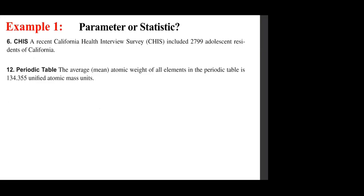A recent California Health Interview Survey included 2,799 adolescent residents of California. The average mean atomic weight of all elements in the periodic table is 134.355 unified atomic mass units. The first one is a statistic — it was a sample of 2,799. The second refers to all elements in the periodic table, so it is a parameter.